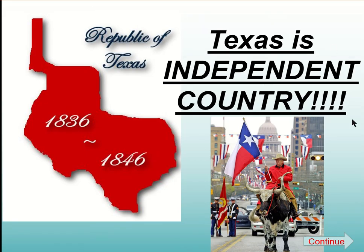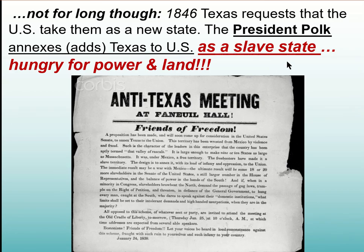From all of this, Texas will then become an independent country called the Republic of Texas. They're only around for 10 years as their own country, but they have their own president, Sam Houston — Houston, Texas, that makes sense. They are one of the very few states that were their own country before becoming part of the U.S.; the other state was Hawaii, which had a queen. So right now historically, Texas is not part of the United States — we have the country of the United States, the country of Texas, and the country of Mexico. The president at the time is Polk, and at the very end of his presidency, he annexes Texas — annex means to add — and he added it as a slave state.